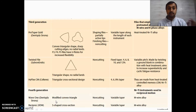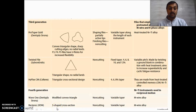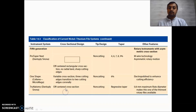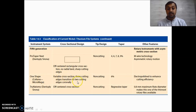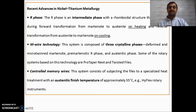Fourth generation files are NiTi instruments with reciprocal motion. Examples are WaveOne and Reciproc. WaveOne has a modified convex triangle cross-section and Reciproc has an S-shaped cross-section; both use M-Wire technology. Fifth generation — ProTaper Next — has a rectangular cross-section. Fifth generation cross-sections are very asymmetric: the One Shape has variable cross-section with three cutting edges transitioning to two cutting edges coronally; TruNatomy has an off-centered cross-section.